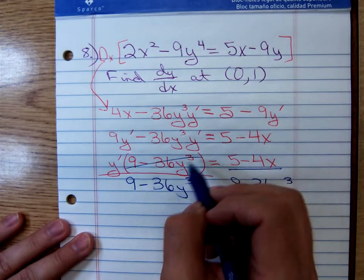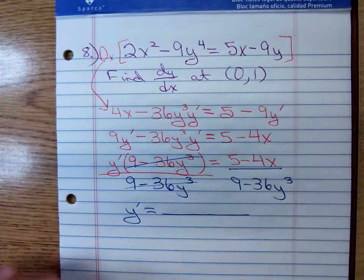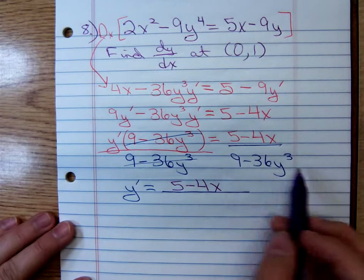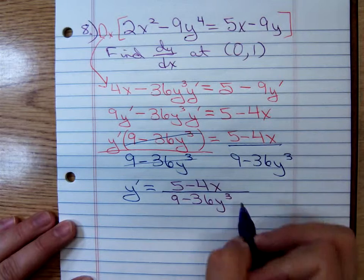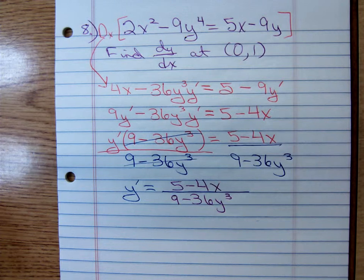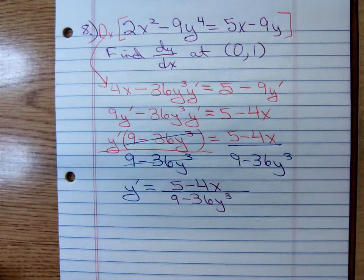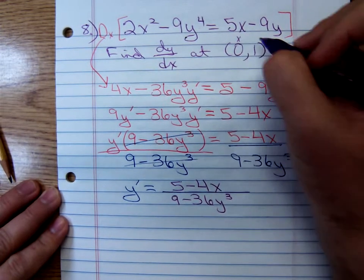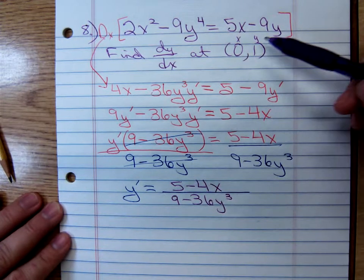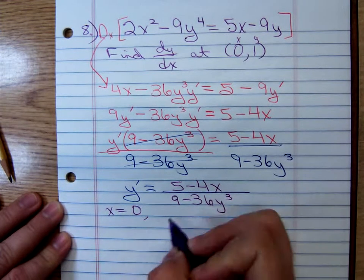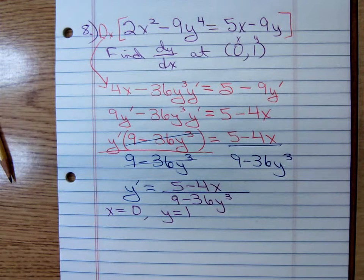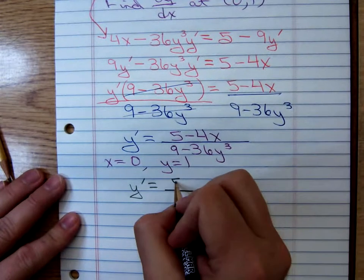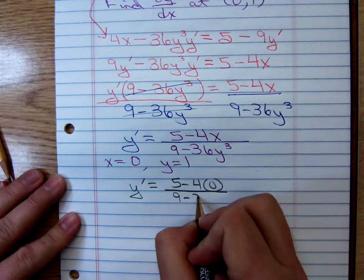So, we now have y prime equals. On top, we have a 5 minus 4x. And on bottom, I have a 9 minus 36y cubed. And we're not finished. They didn't ask us just to find dy dx. They told us to find the value of that derivative at the order pair 0, 1. So, realize, x is acting like 0 and y is the number 1. So, we're going to have to plug in 0 for x and 1 for y.